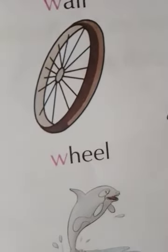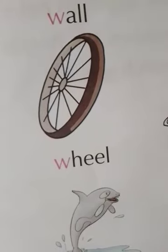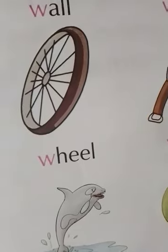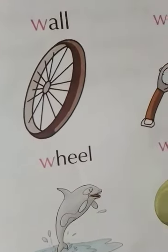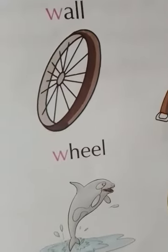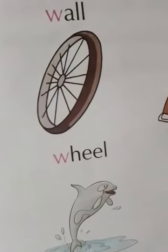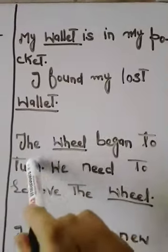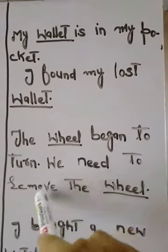Wheel کا استعمال ہم cars میں، carts میں، wheelchairs میں، اور bicycles میں کرتے ہیں۔ یہ wheel spin ہوتا ہے، یعنی یہ turn ہوتا ہے۔ Wheel کو ہم اردو میں پہیہ کہتے ہیں۔ Wheel is a circle shaped device and its main purpose is to allow the things to roll. The wheel began to turn. We need to remove the wheel.